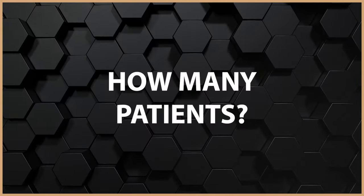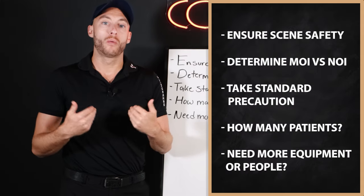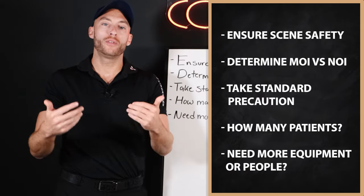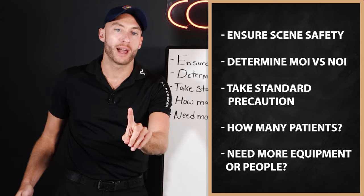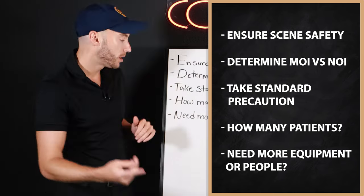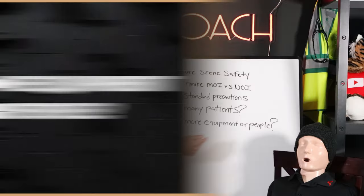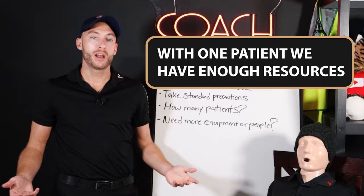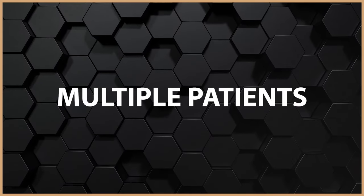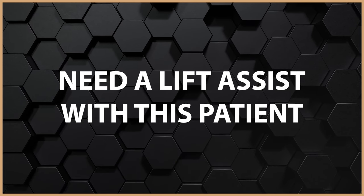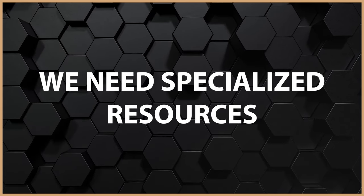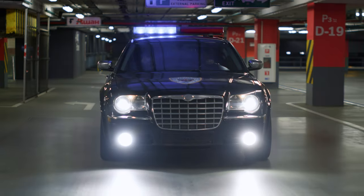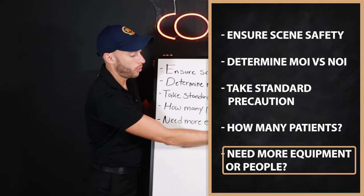Next is determining how many patients. I think about this a lot with motor vehicle accidents — if we go to an MVA with maybe three or four cars, how many patients do we have? That reminds us: do we need more equipment or more people? If we have one patient and we're an EMS crew, we should have enough resources. If we have multiple patients, or we need a lift assist, or specialized resources from the fire department, or we might need law enforcement — this is where we consider getting more help.